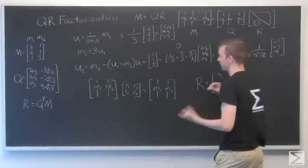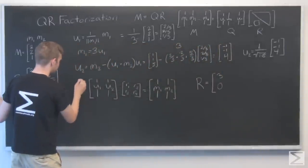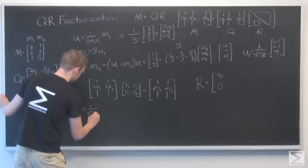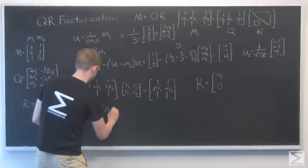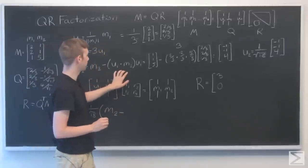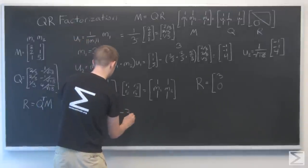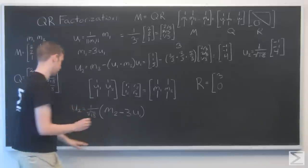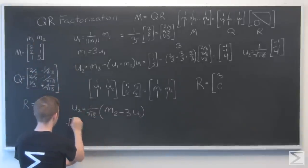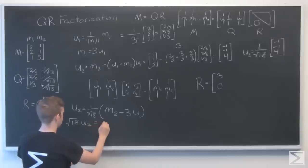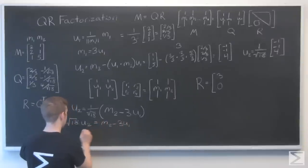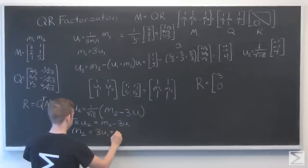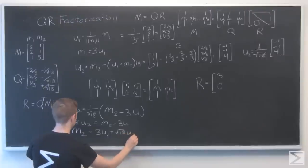Similarly, for u2, let me just rewrite everything that we did. We found out that u2, my last step was dividing everything by the square root of 18. And here I have m2 minus this number, which we discovered was 3. If I multiply both sides by the square root of 18, m2 is equal to 3u1 plus the square root of 18 times u2.